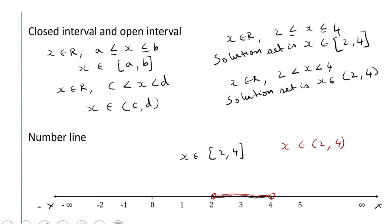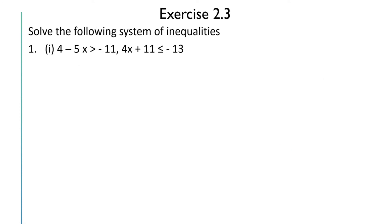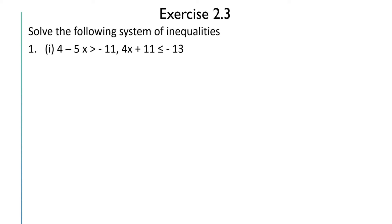Now we will solve problems from Exercise 2.3 of ICSE Mathematics by M.L. Aggarwal. The first question is to solve the following system of inequalities: 4 - 5x ≥ -11 and 4x + 11 ≤ -13. In my previous video I solved problems where a single inequality was given. Here we have a system of inequalities and we have to find the solution set for x which satisfies both.